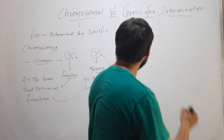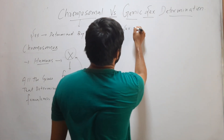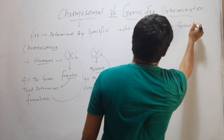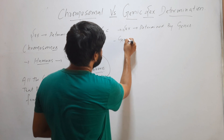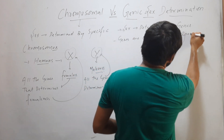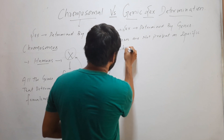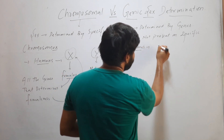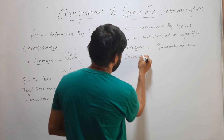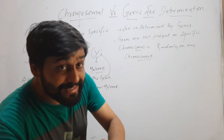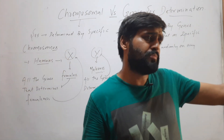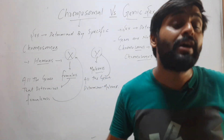Now, coming to genic sex determination. Here, sex is determined by genes. And these genes are not present on a specific chromosome — they are present randomly on any chromosome. Some genes may be on chromosome number 1, some genes may be on chromosome number 5, and some may be on others.